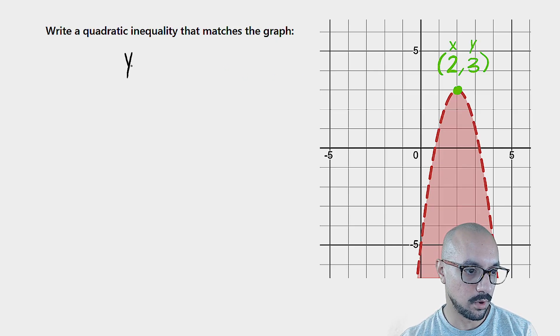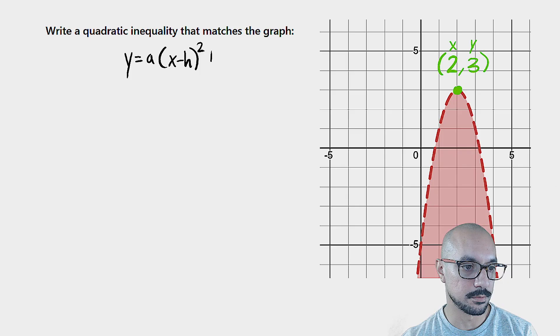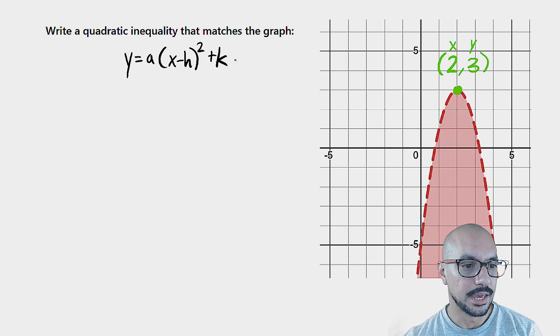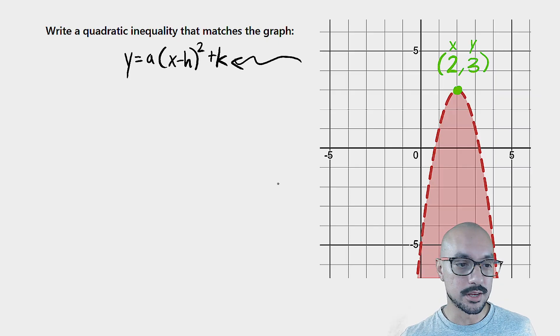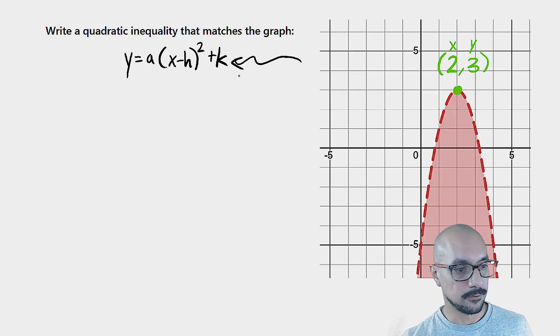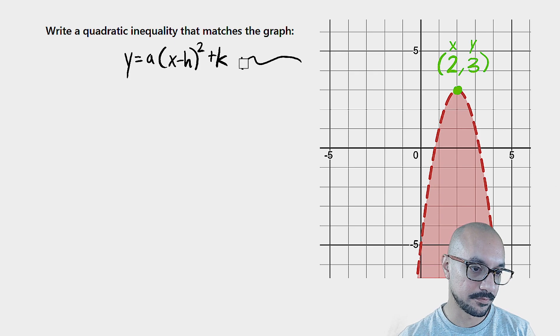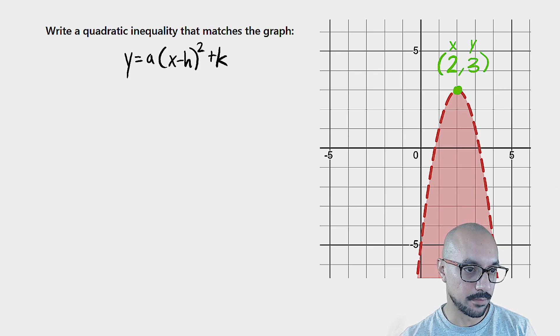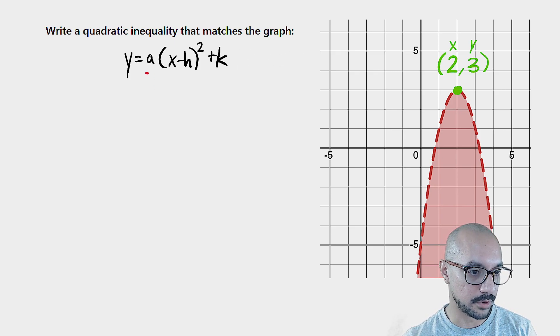Vertex form is y equals a times the quantity x minus h squared plus k. If you're looking at this form, you're saying, where did I get that from? It probably came from your notes. This form, vertex form, is always the same. To fill in vertex form, I really just need three parameters.